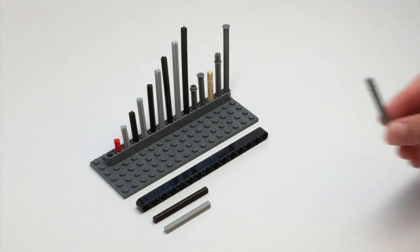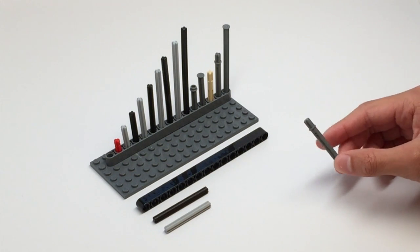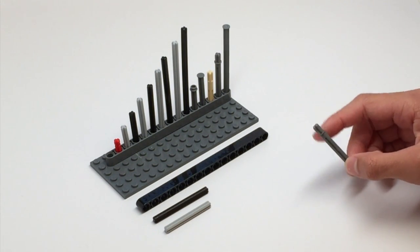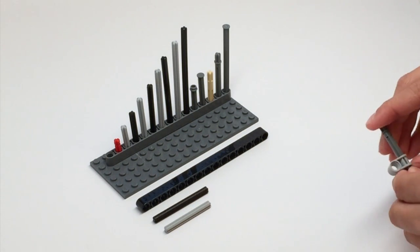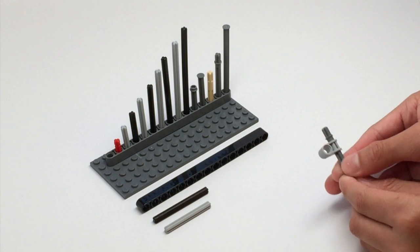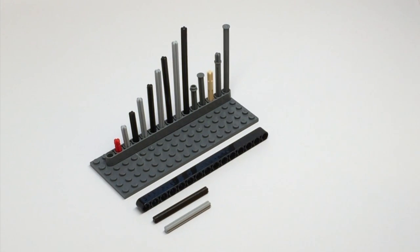We also have these axles that have kind of something in between, a little blocker in between. The little blocker prevents axle holes from going all the way through it, and it also prevents a beam from going all the way through it.